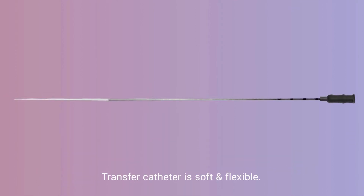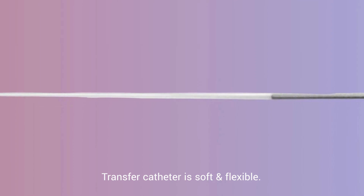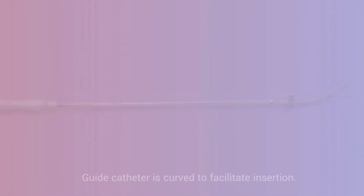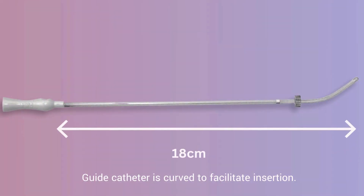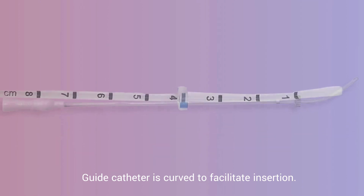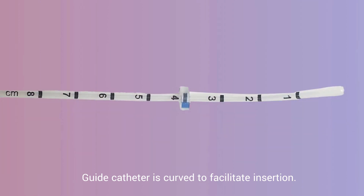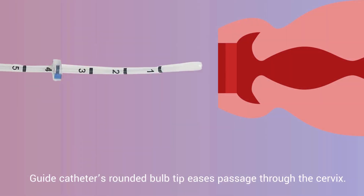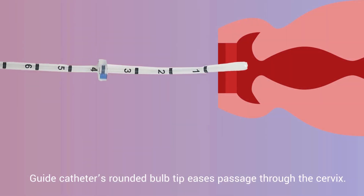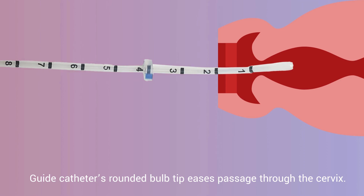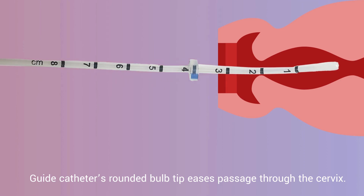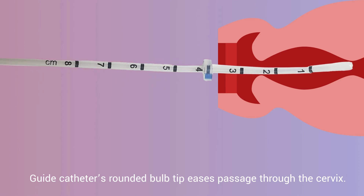The transfer catheter is soft and flexible. The guide catheter is curved to facilitate insertion, and the guide catheter's rounded bulb tip eases passage through the cervix.